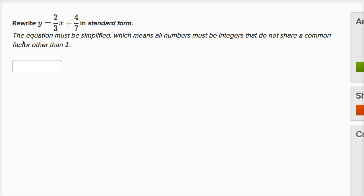All right, we'll worry about this second part in a little bit. Let's see if we can rewrite this. So it's y equals 2/3x plus 4/7. So the way that it's written right now, this is slope-intercept form.